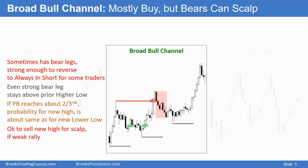A lot of bears will trade the market for scalps — every new high they'll sell. But if they sold at a high and the market broke out again, the bear is at a loss. And that's one of the main reasons why it's better only to be looking to buy even if the channel is broad. Experienced traders will trade both ways, but beginners should only be looking to buy as long as the market is always-in-long.